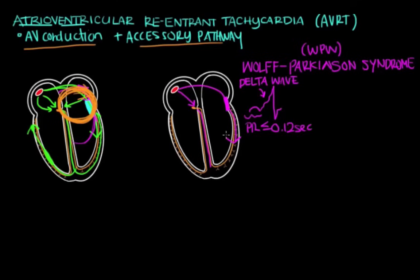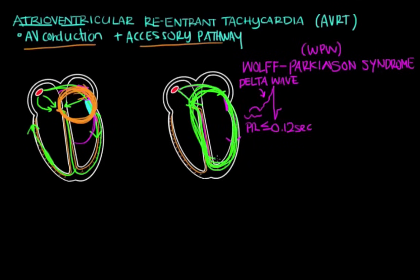This baseline finding in WPW is not AVRT itself — you won't get a tachyarrhythmia just from this. However, if a premature beat comes from the SA node toward the AV node, and the accessory pathway happens to be in a refractory period, signal will travel down through the ventricles. It will travel back up, and by the time it reaches the accessory pathway, it will no longer be refractory. Signal can then travel through the accessory pathway back to the AV node, creating the reentrant circuit — the signal loops around and around, generating the tachyarrhythmia seen in AVRT.